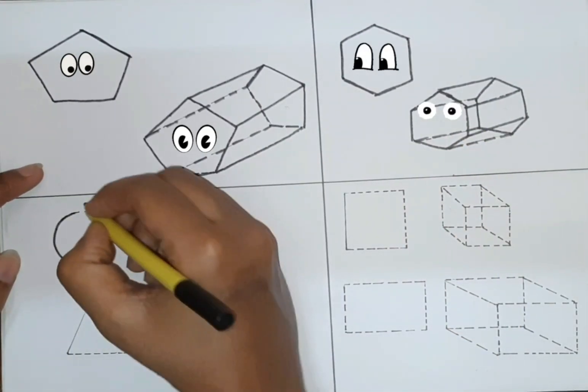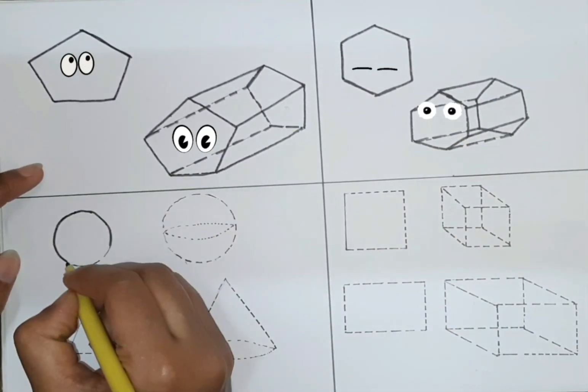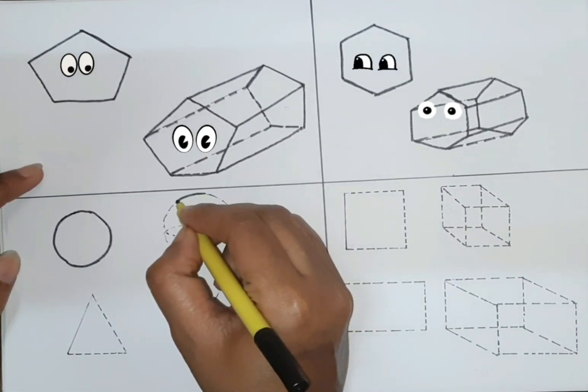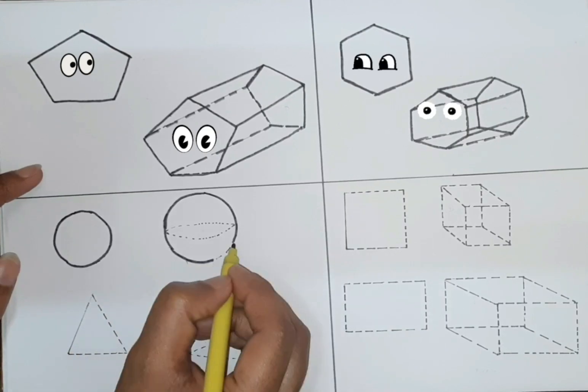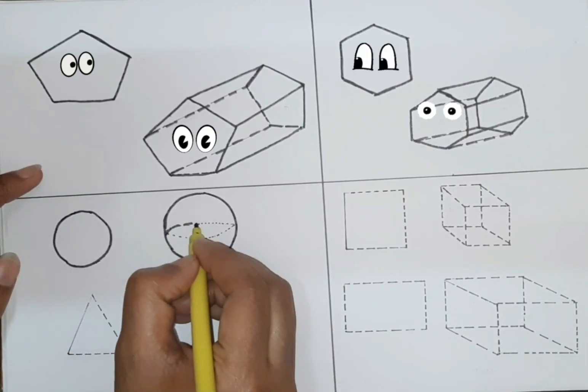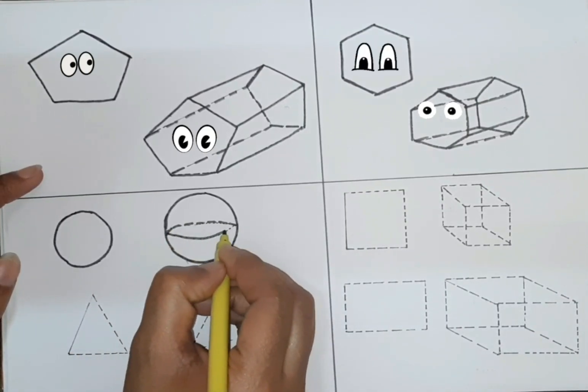Now it is circle. Circle in 2D shape, like a bangle. And it is sphere, like a tennis ball. Our earth has a sphere shape.